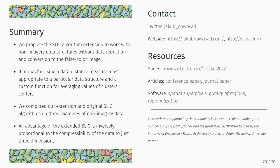You can find all the slides on my website, and I also put the link in the app. There is a related conference paper, and last month we published a journal paper explaining all of these examples. I've also put links to the software: the supercells package to create spatial superpixels, the regional package to calculate inhomogeneity and isolation of regions, and a package to apply regionalization algorithms like SKATER. That's all — I hope this will be useful in your work. Now it's time for questions.